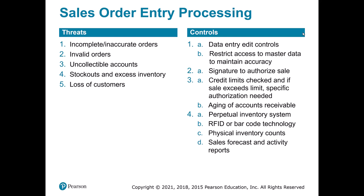Problems at the sales order stage include incomplete or inaccurate orders, invalid orders, uncollectible accounts where we sell to a customer we can't get cash from, and stock-out or excess inventory — we don't want a bunch of stuff sitting in our warehouse wasting cash. Controls include data entry controls on who can input inventory, who reconciles inventory accounts, and an authorization process for sales — for example, the sales manager reviews all quotes before they go out.